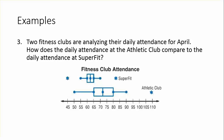Another observation: Athletic Club attendance is greater than 80 for 25% of the time, while Super Fit is always 70 or less. The Athletic Club is probably busier — maybe it's bigger or in a different part of town. The median for Super Fit is around 62 or 63, while the Athletic Club's median is around 72 or 73, so the Athletic Club has a higher median attendance.